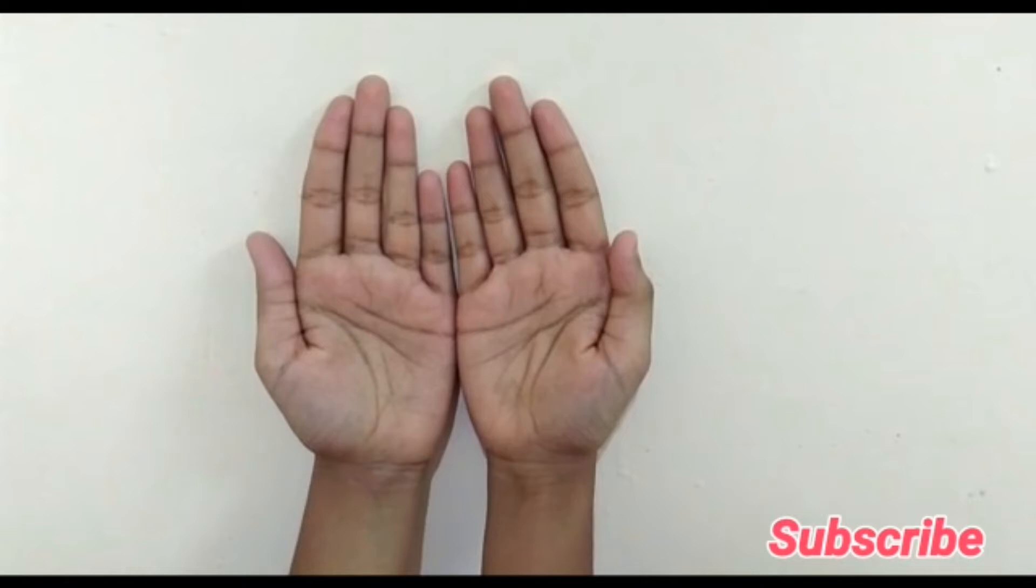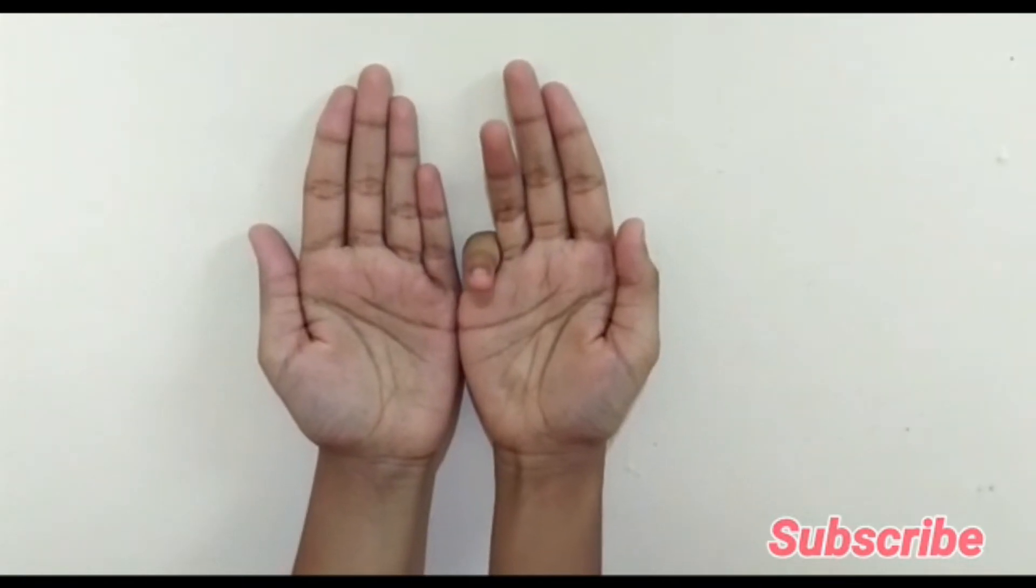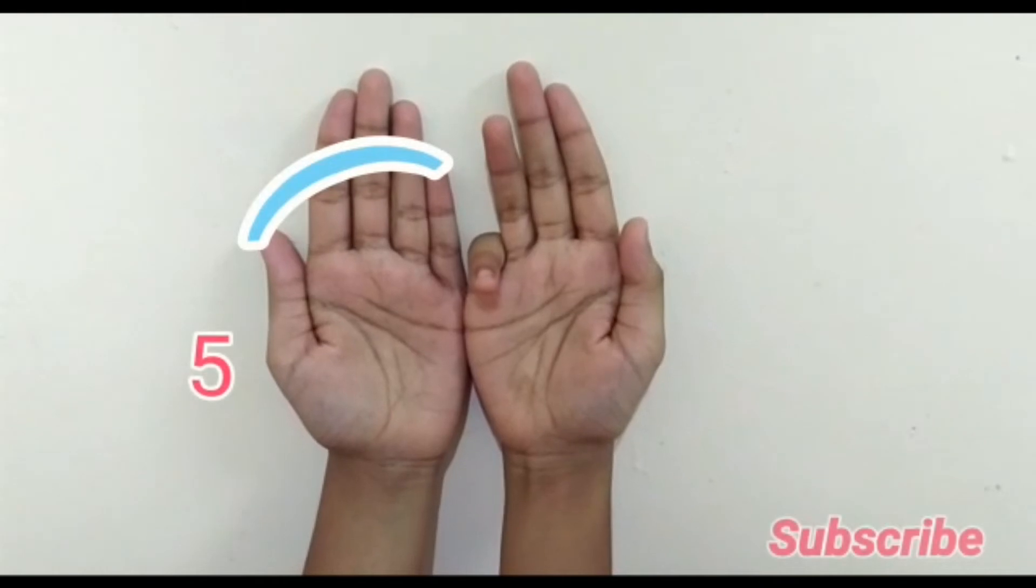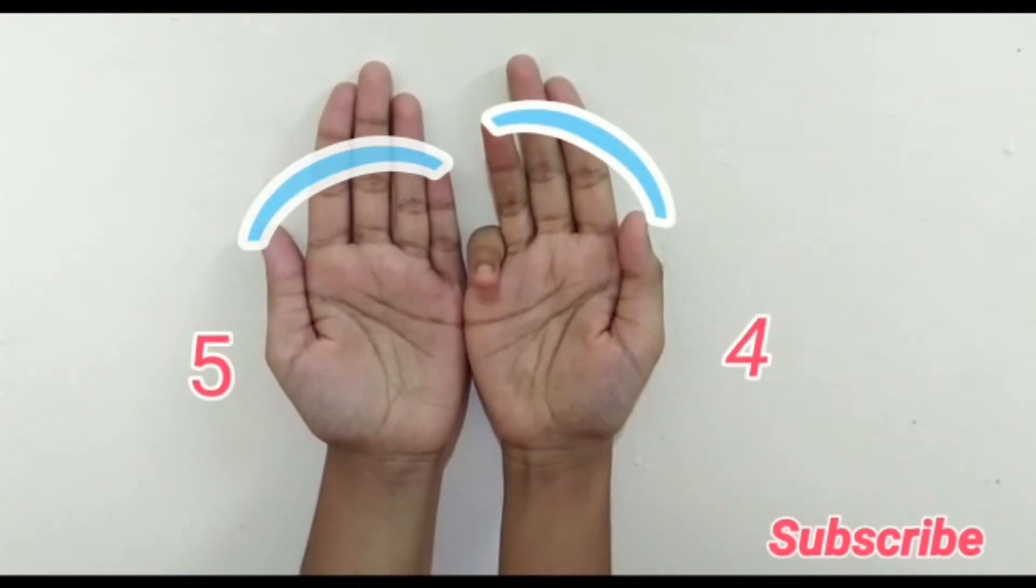6 into 9. So fold your sixth finger. Towards the left side of it it's 5 and towards the right side it's 4. So 6 times 9 are 54.